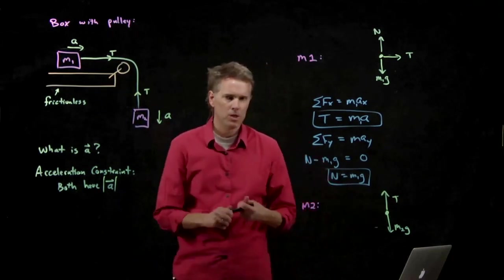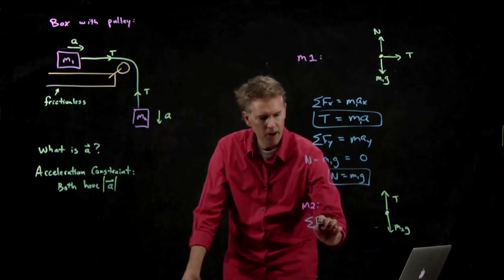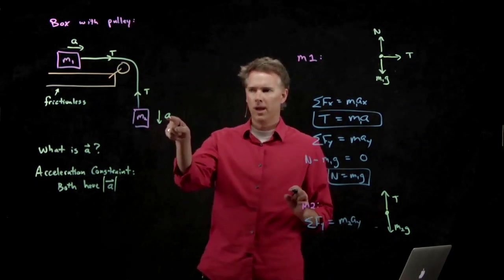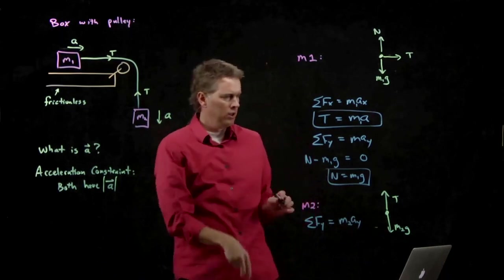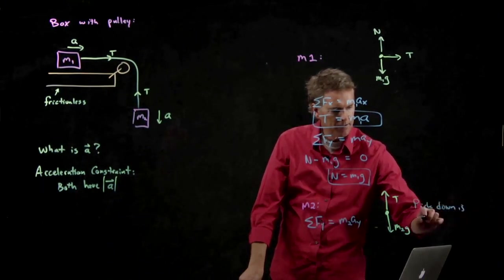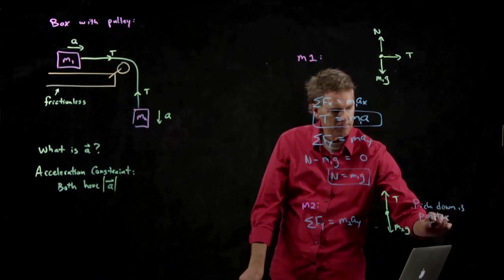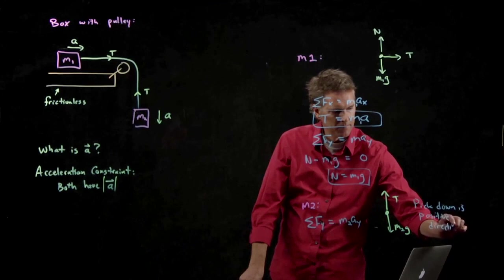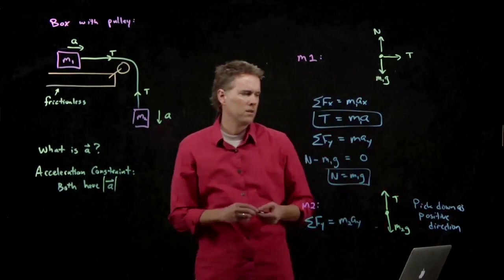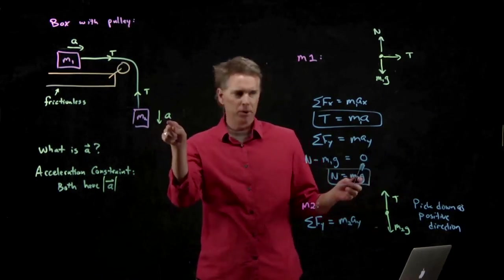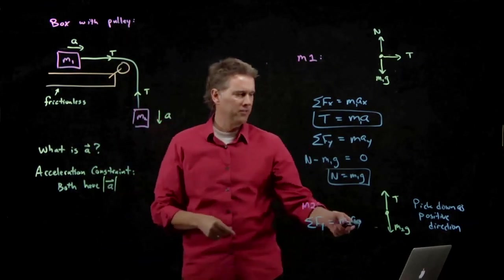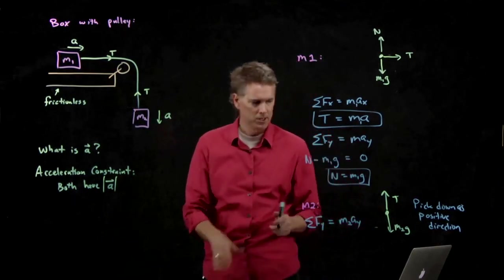And now we just have one simple equation for this. We have sum of the forces in the y-direction equals the mass times the acceleration in the y-direction. But we know that it's going to accelerate down. So let's say down is our positive direction. If you picked up as a positive direction, you would just have to put a minus sign on this a. And this is what we mean by the acceleration constraint. If we're going to solve for the same a, we had better get them going in the same direction.